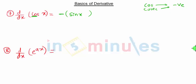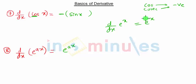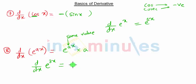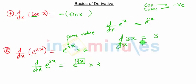The derivative of e raised to x is e raised to x. The derivative of e raised to ax is also e raised to ax, but we multiply by the constant a. For example, d/dx of e raised to 3x is e raised to 3x into 3, because the derivative of 3x is 3. So first we take the derivative of the outer exponential term, then multiply by the derivative of the inner term.